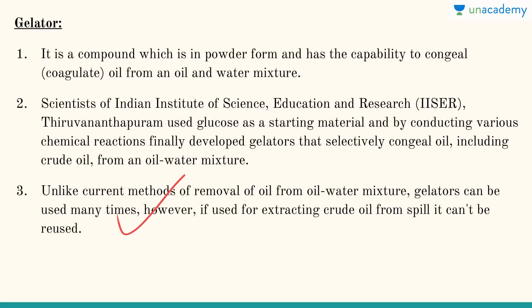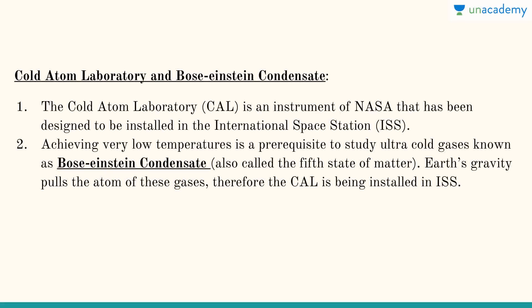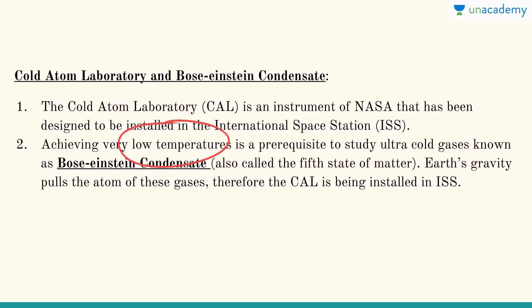Next we have the Cold Atom Laboratory and Bose-Einstein Condensate. We have solid, liquid, gas, and plasma — and the fifth state of matter is Bose-Einstein Condensate, which is very fragile. The Cold Atom Laboratory is an instrument of NASA designed to be installed in the International Space Station, which flies in low Earth orbit. Achieving very low temperature is a prerequisite to study ultra-cold gases, which form the Bose-Einstein Condensate.